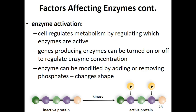Many enzymes are inactive as they move through our system. For example, pepsin is typically found in our stomach as an inactive form known as pepsinogen. Complement proteins like C3 and C4 are produced by our liver, released into our blood, and wait for a pathogen to activate them. Once activated by cleaving off a portion or adding a phosphate, the enzyme starts working.